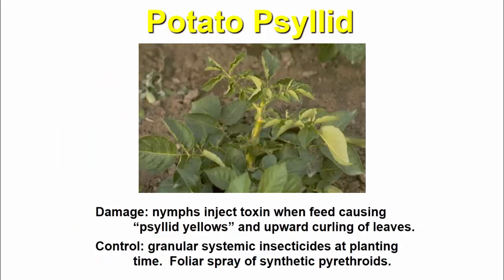Nymphs inject toxins when feeding, causing psyllid yellows and upward curling of leaves. For control: use granule systemic insecticides at planting time, and foliar spray of systemic pyrethroids.